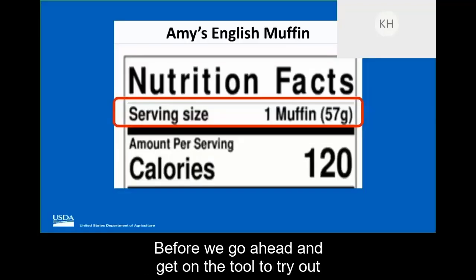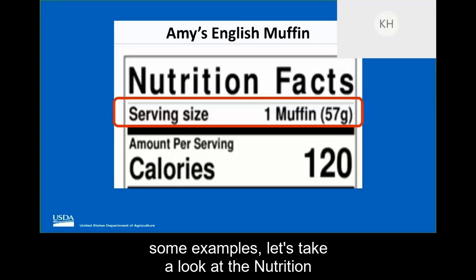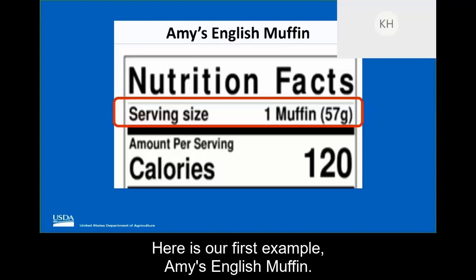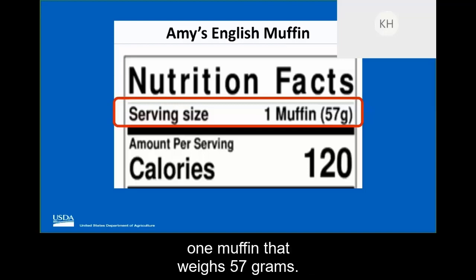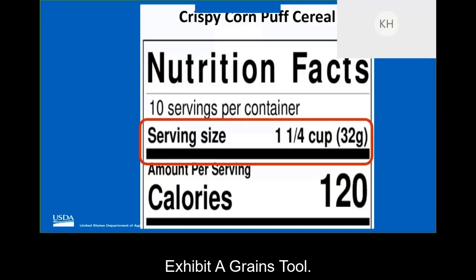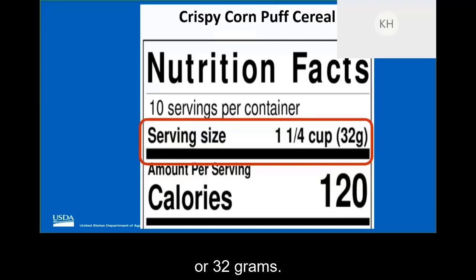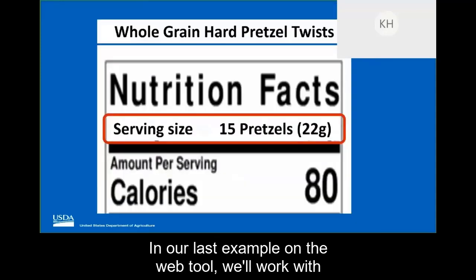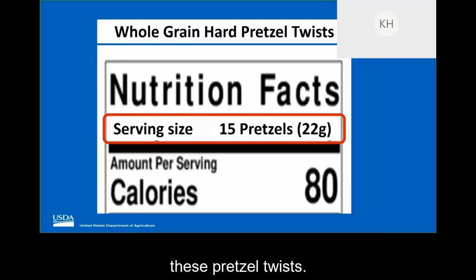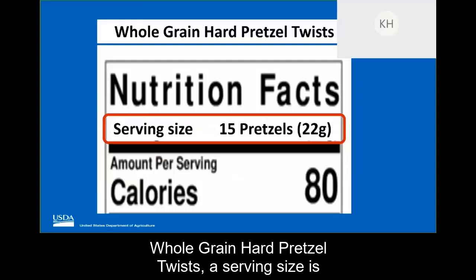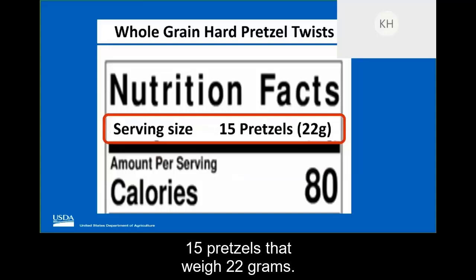Before we get on the tool to try out some examples, let's take a look at the nutrition facts labels for our examples. Here is our first example, Amy's English Muffin. As you can see circled in red, the serving size is one muffin that weighs 57 grams — this is the information we will need to use in the Exhibit A Grains tool. For our second example, we'll look at crispy corn puff cereal. The serving size is one and a quarter cup, or 32 grams. Our last example on the web tool will be these pretzel twists. According to the nutrition facts label, a serving size is 15 pretzels that weigh 22 grams.